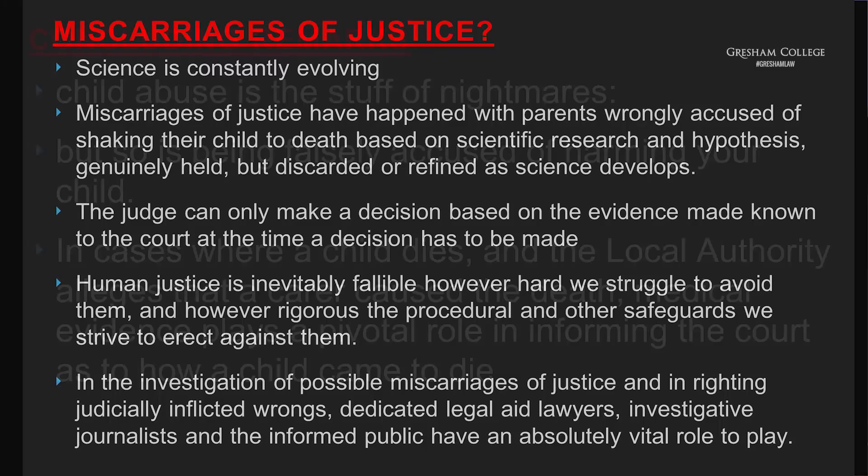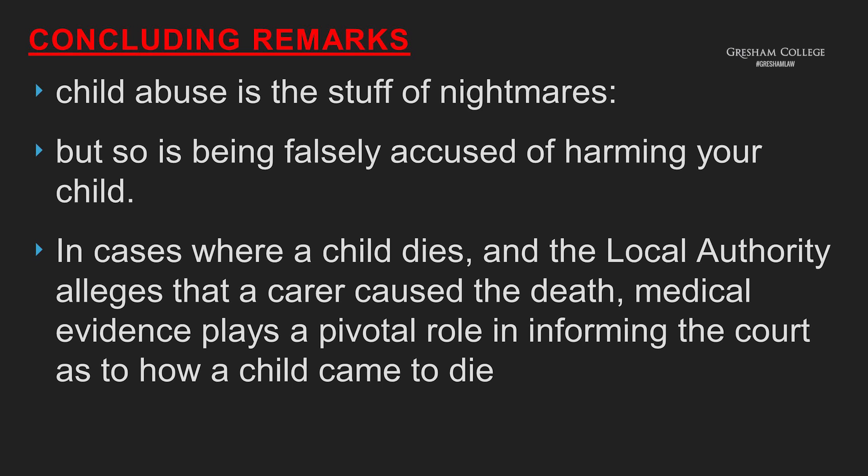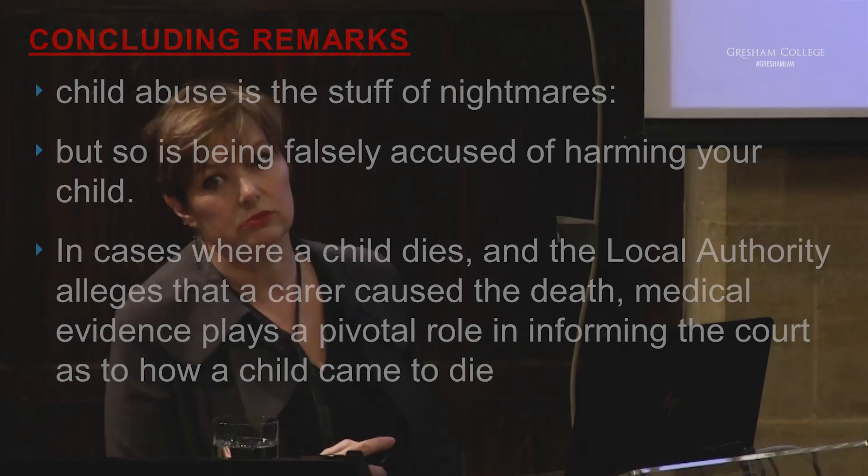Child abuse is the stuff of nightmares — but so too is being falsely accused of harming your child. In cases where a child dies and the local authority alleges a carer caused that death, medical evidence plays a pivotal role. Up until the last decade, it was thought there was no conceivable way to explain blood around a baby's brain with blood of two ages — old and acute — other than the child having been shaken not once but twice. The significance being that if a child has been shaken once at home, the non-inflicting parent knows the child has been injured — and if they've allowed it to happen again, that implies a failure to protect. A number of children were removed on the basis of that medical evidence.